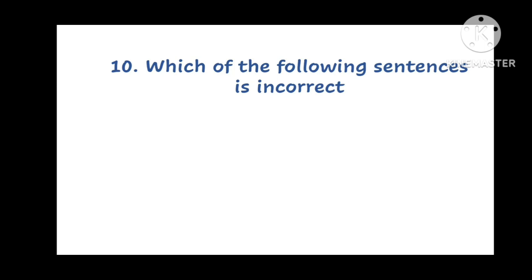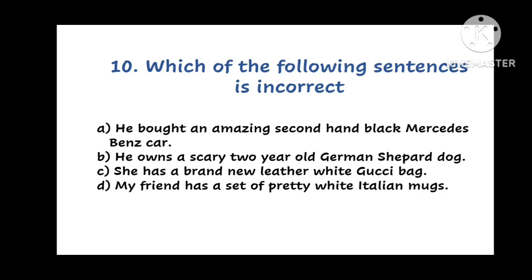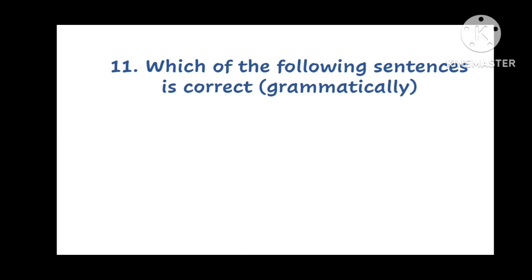Next question. Which of the following sentences is incorrect? Now you have to choose the incorrect sentence. And the options are A. He bought an amazing second hand black Mercedes Benz car. B. He owns a scary two year old German shepherd dog. C. She has a brand new leather white Gucci bag. Or D. My friend has a set of pretty white Italian mugs. Which is incorrect sentence?